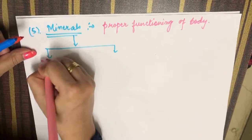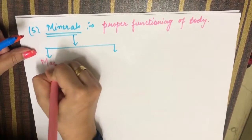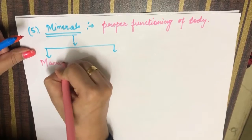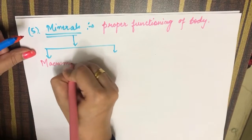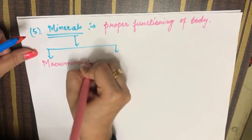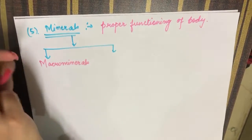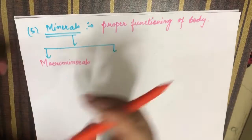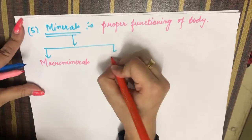The first type is macrominerals, and the second one is trace minerals.